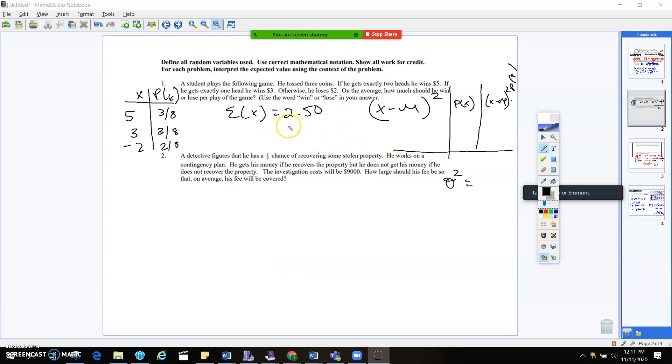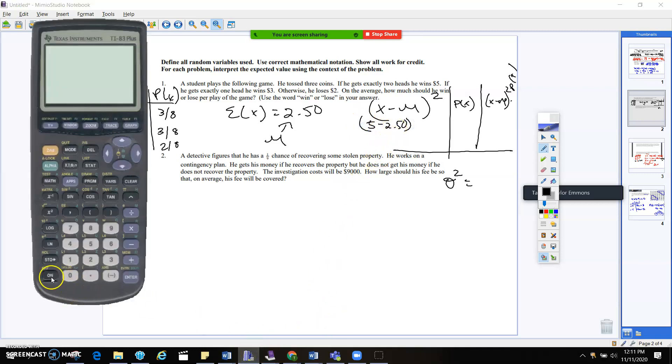Alright, so we found out that our expected value was 250, so this is going to be our μ. Okay, so we're going to take 5 and subtract μ and then square it. So we're going to do 5 minus 250. I'm going to go into my calculator. I'm going to say 5 minus 250, which obviously is negative 245, and then we're going to square it, which gives us 625.